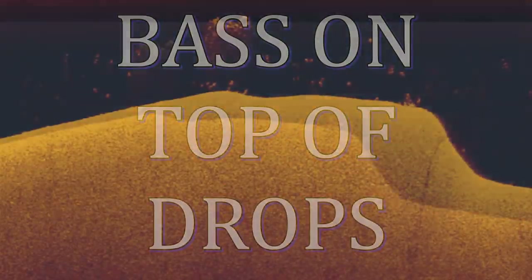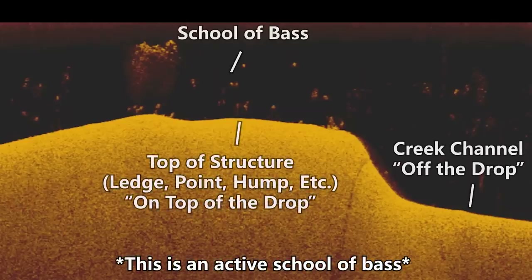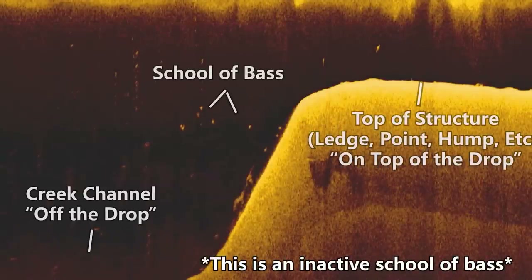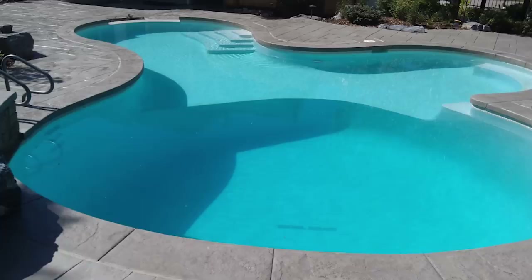Number three: bass on top of drops. The next way to identify if bass are actively feeding is to look for fish on top of drop-offs. Here's an image of a school of bass on top of an offshore ledge — these fish were actively feeding and I was able to get them to bite. And here's an image of a school of bass off the side of an offshore ledge — these fish were inactive, not feeding, and I could not get them to bite.